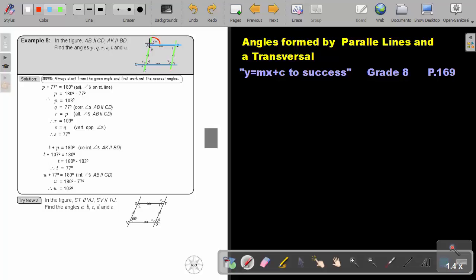Can you see this green line is a straight line? So P plus 77 equals 180. It's a straight line, angles, adjacent angles on a straight line. Then I subtract 77 on both sides and I get that the value of P is 103.